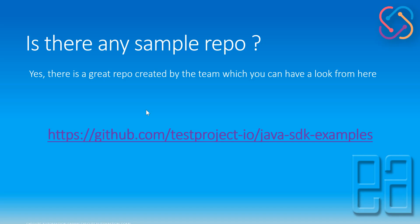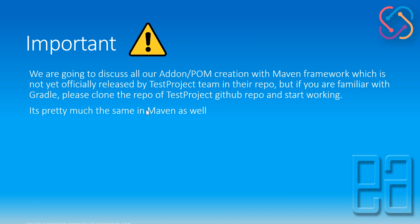There is a great sample repo created by the team at github.com/testprojectivo/java-sdk-examples where you can see how to work with add-ons, page object models, and runners. However, we are going to create our own repo because we'll be discussing add-on and page object model creation with the Maven framework, which isn't officially in the repo yet. If you're familiar with Gradle, you can clone the test project GitHub repo and work from there, as the test project team used Gradle for building the project framework. But we are going to use Maven here.